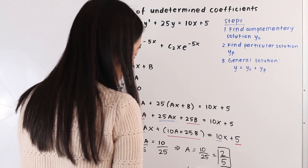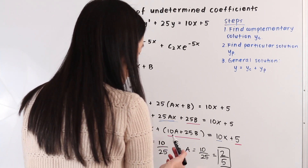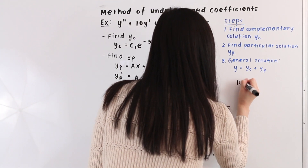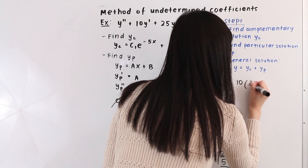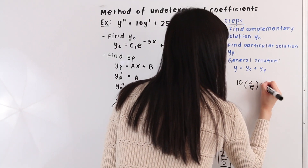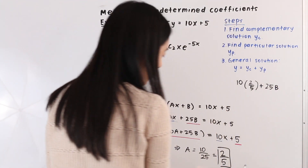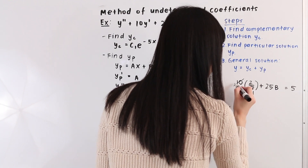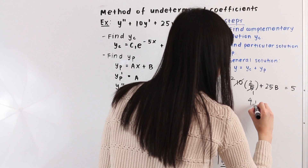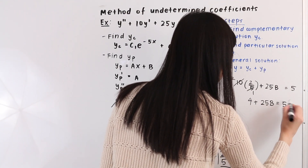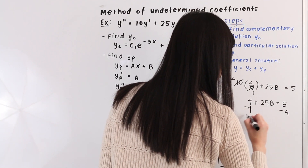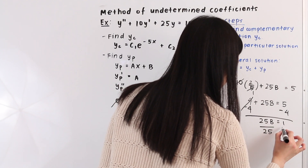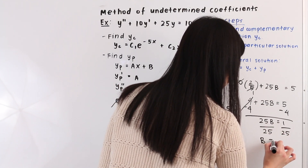Next we set the constant term coefficients equal. On the left we have 10a plus 25b and on the right we have 5. Substituting a equals 2/5, we get 10 times (2/5) plus 25b equals 5, which simplifies to 4 plus 25b equals 5. Subtracting 4 from both sides gives 25b equals 1, and dividing by 25, we get b equals 1 over 25.